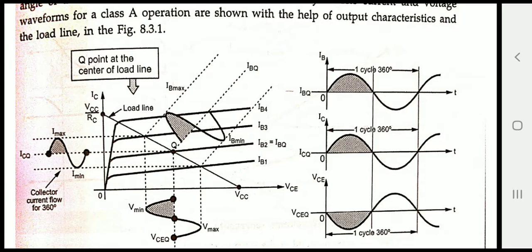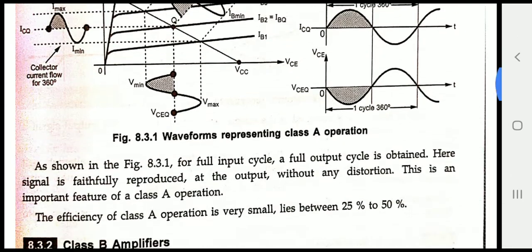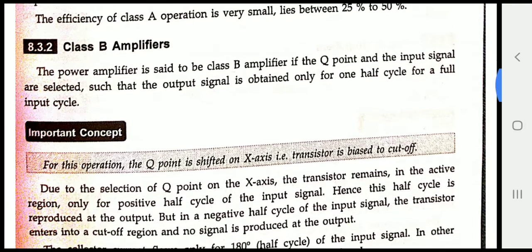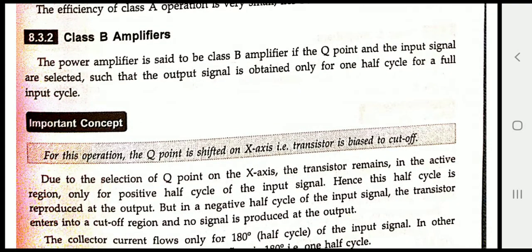That is the explanation of the graphical representation, waveforms, and definition of Class A power amplifier. However, there is a problem with Class A amplifier: its efficiency is very small, lying between 25 to 50 percent. Our intention is to achieve efficiency closer to 100 percent, so we move on to the next classification — Class B amplifier.